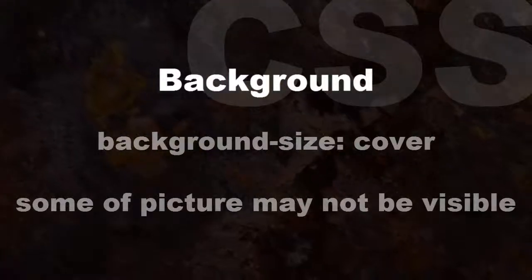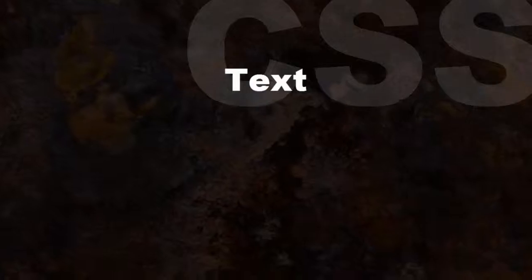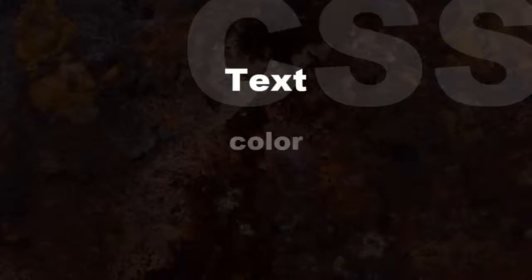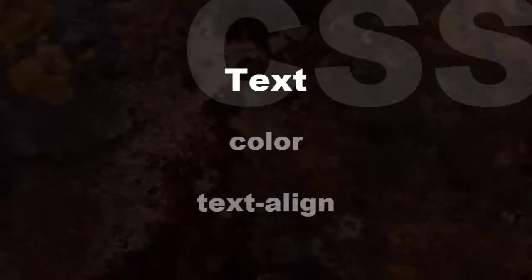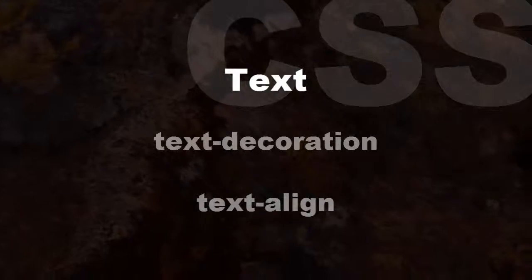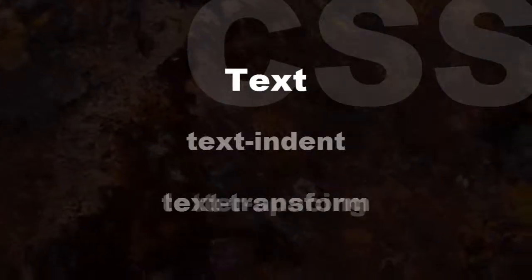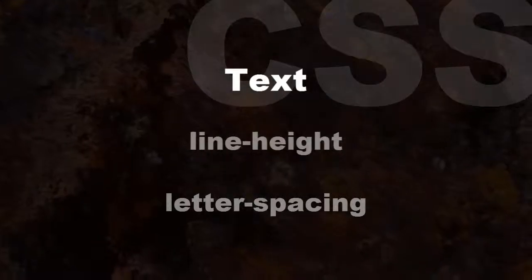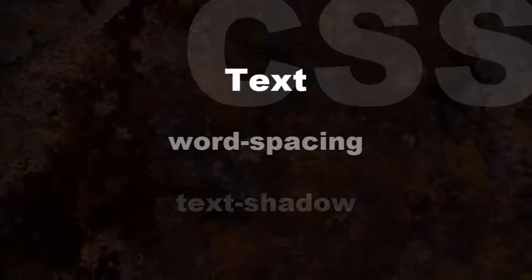Text properties can be applied to any HTML tag which can contain text. The key properties are: color, text-align, text-decoration, text-transform, text-indent, letter-spacing, line-height, text-shadow, and word-spacing.